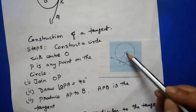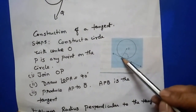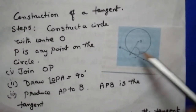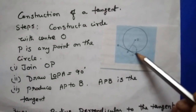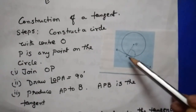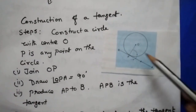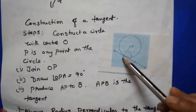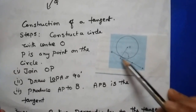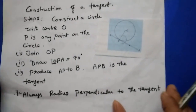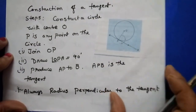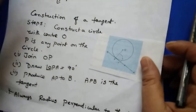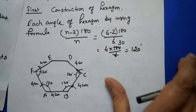How to construct the tangent through a point on the circle? O is the center of the circle and P is a given point on the circle. You are going to construct angle OPA equal to 90 degrees, then produce AP up to B. Now APB is a tangent to the circle through the given point P. Always remember: the radius is perpendicular to the tangent.